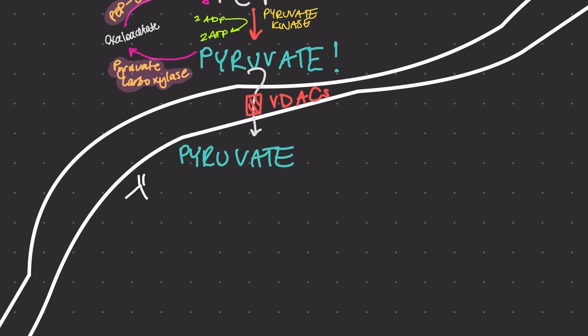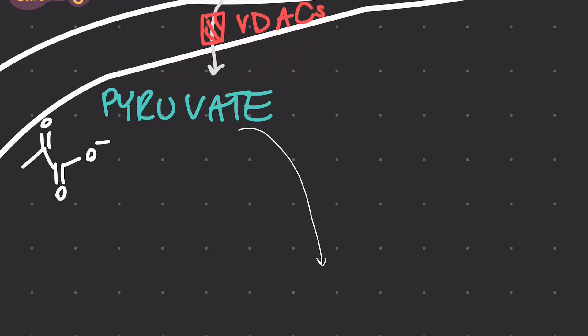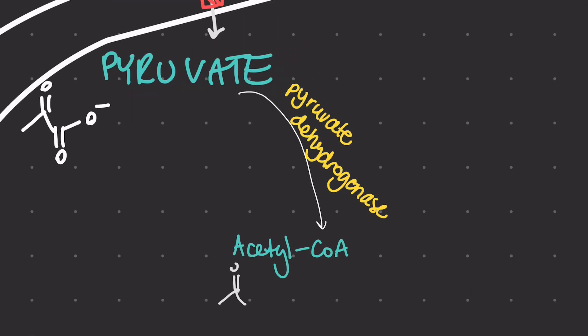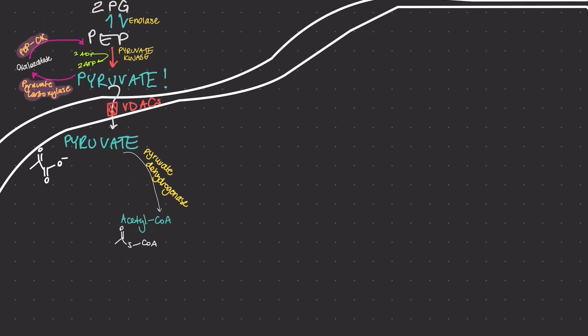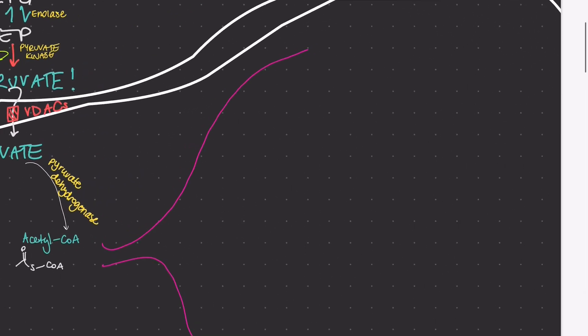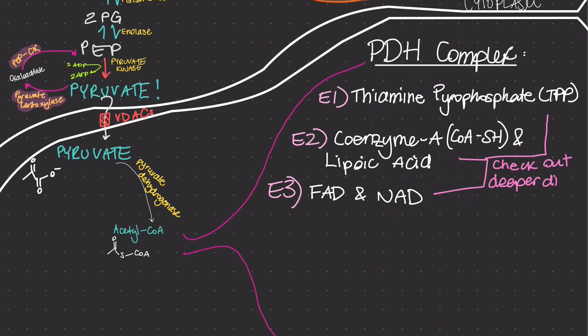Pyruvate tends to have a lot of different fates. We'll talk about a couple. Pyruvate dehydrogenase can convert pyruvate into acetyl-CoA. That leads us into something known as the PDH complex, and I'd suggest watching Dr. A's video on this before moving on. I've written some information below that might be worthy to know.